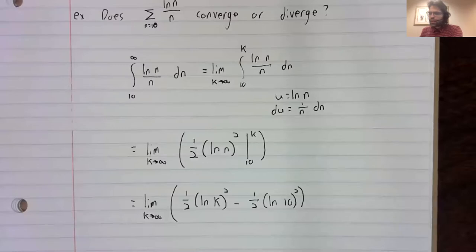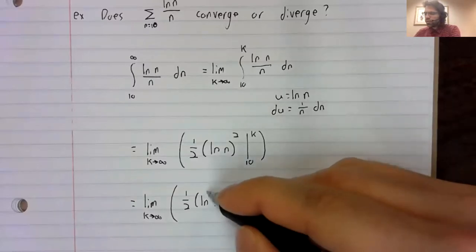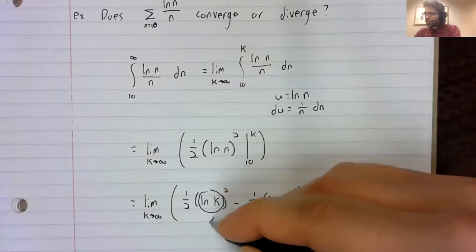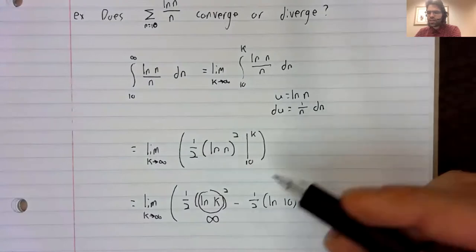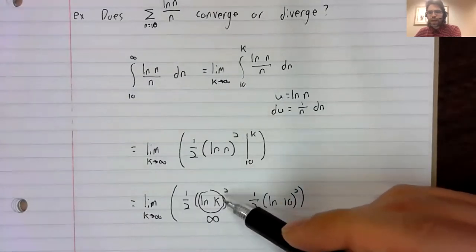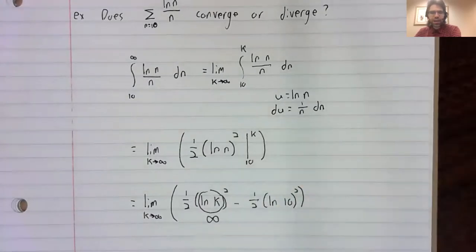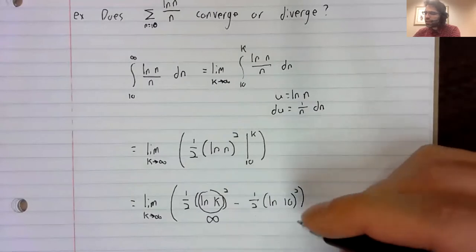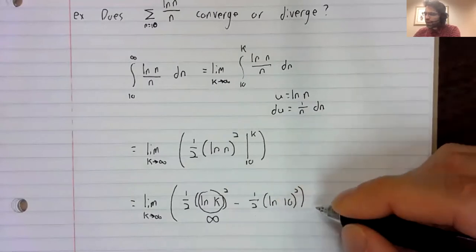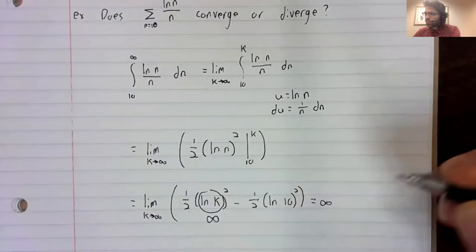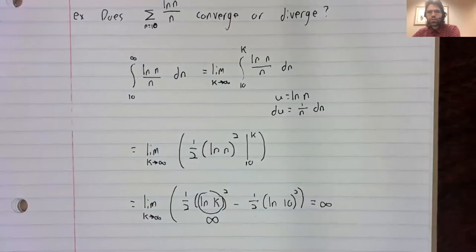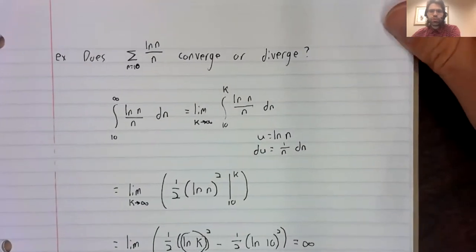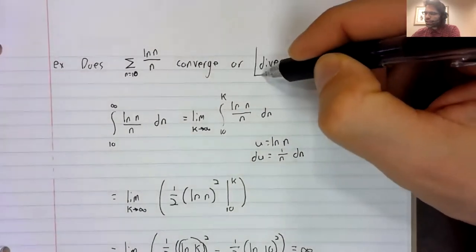And as k goes to infinity, the natural log of k goes to infinity. Infinity squared times one half, still infinity, minus a finite number, still infinity. So the improper integral diverges.